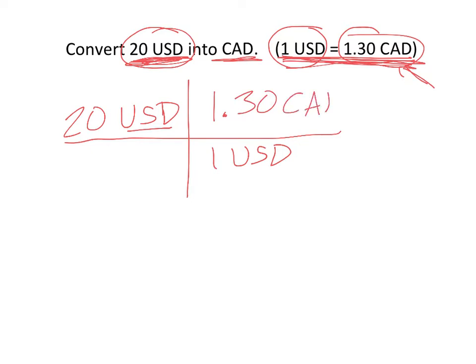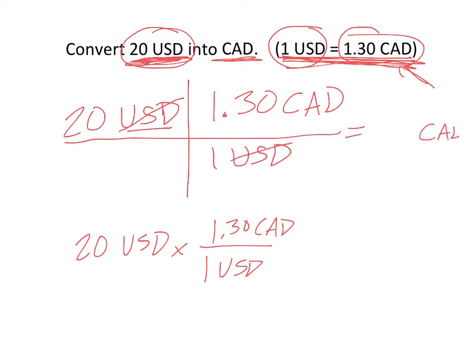And so if we multiply this out, this is the same as writing it like this. This is actually the more proper way to do this. We're basically just multiplying by a fraction. And when you multiply by a fraction, if a unit is divided by the same unit, they will cancel. So U.S. dollars will cancel, leaving me with just the Canadian dollar unit, which is what I want.